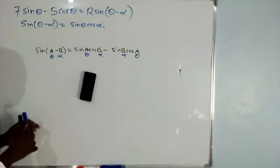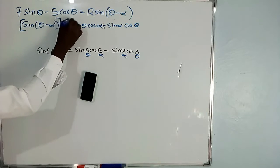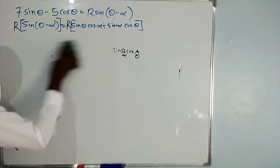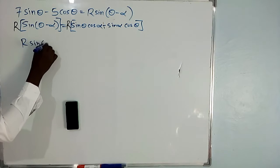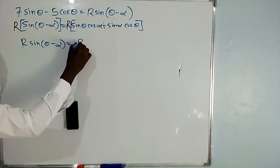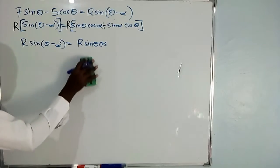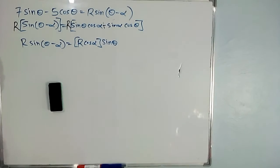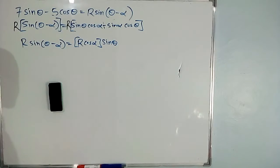Having expanded that, we need R sin(theta minus alpha), meaning we multiply both sides of the equation by R. So R sin(theta minus alpha) equals R cos alpha sin theta minus R sin alpha cos theta. We rewrite it this way because we have 7 sin theta in our expression, so sin theta is the term whose coefficient we want to compare.